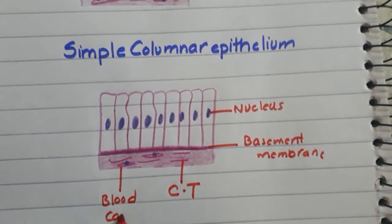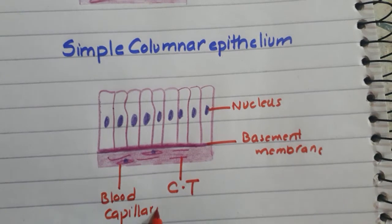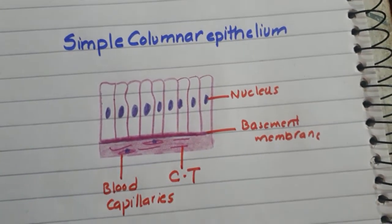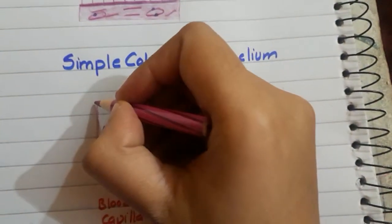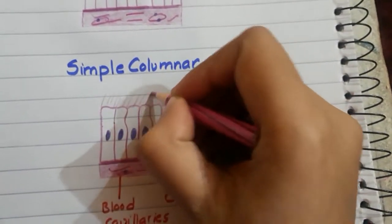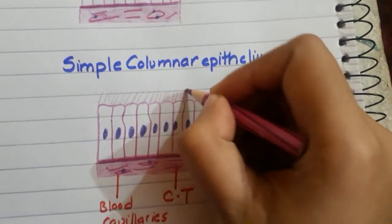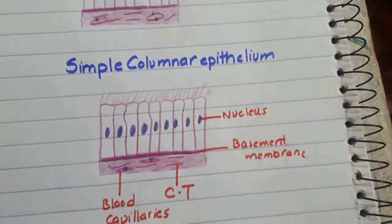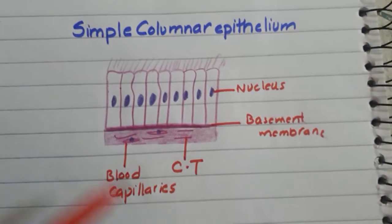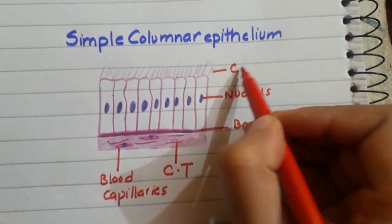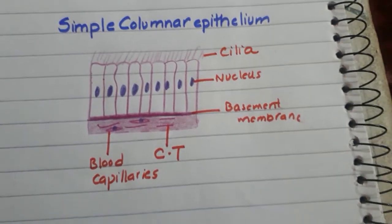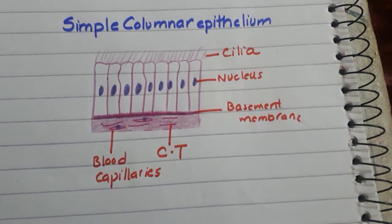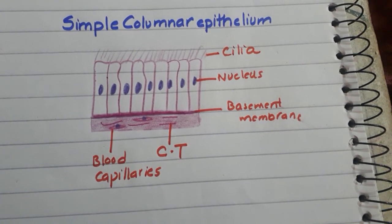Now simple columnar epithelium is two types: ciliated and non-ciliated. If we want to make cilia we can make cilia, and you can make two diagrams, one ciliated and one non-ciliated. And that's the diagram of simple columnar epithelium.